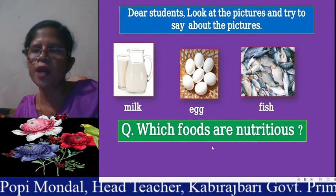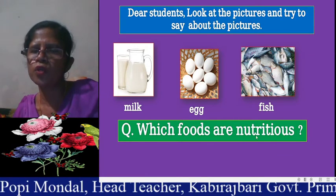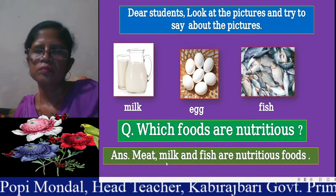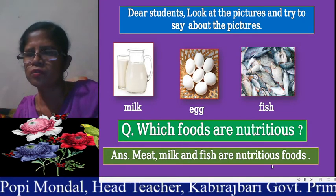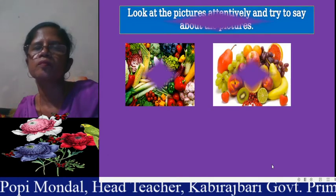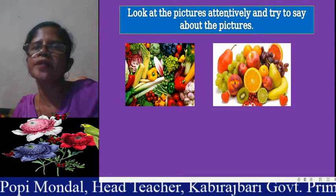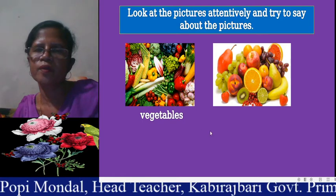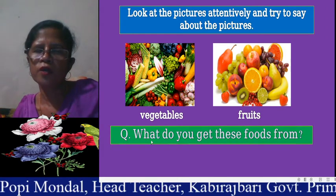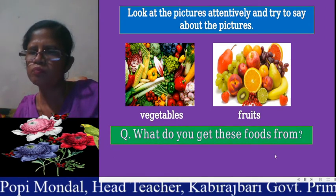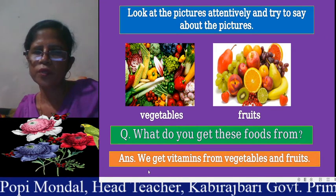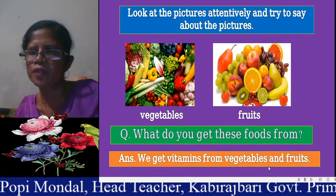Which foods are nutritious? Meat, milk and fish are nutritious foods. Look at the pictures attentively and try to say about the picture — vegetables, different kinds of foods. What do we get from these fruits? We get vitamins from vegetables and fruits.